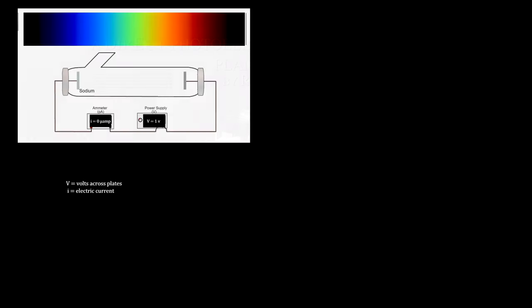Here's a virtual reproduction of his photoelectric effect experiment. A vacuum tube contains two plates connected to an external circuit that produces a voltage between the plates to oppose the flow of electrons.